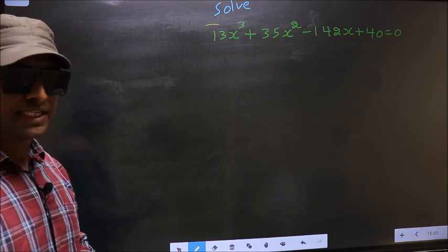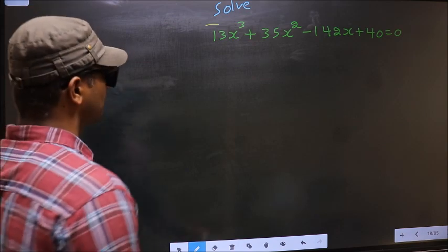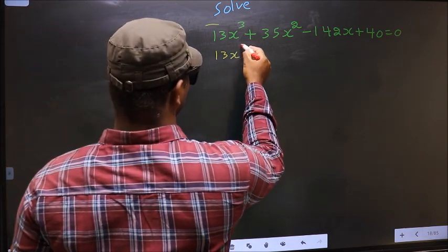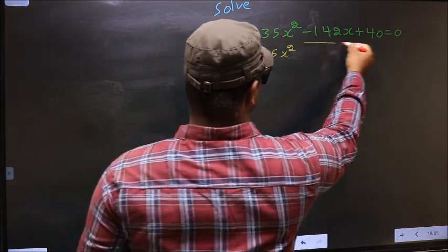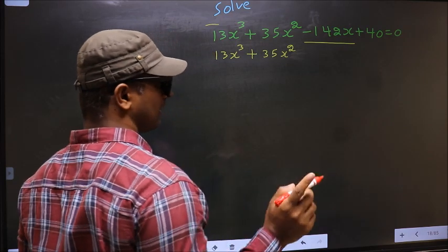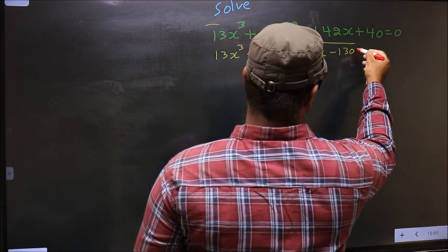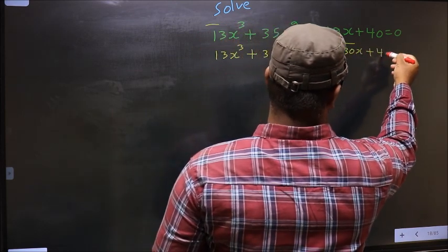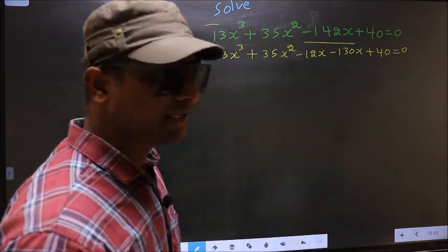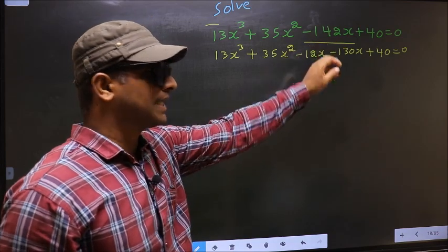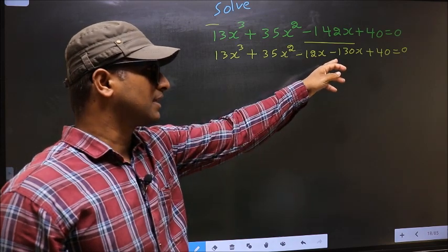For that, we have to change the x term. So: 13x³ + 35x² — in place of -142x, I write -12x - 130x + 40 = 0. In place of -142x, I have written -12x - 130x.